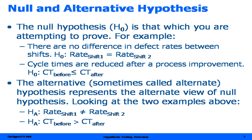In hypothesis testing, the null hypothesis is what you attempt to prove. The notation for this is H sub 0. Its counterpart is called the alternate or alternative hypothesis and it's known as H sub A.